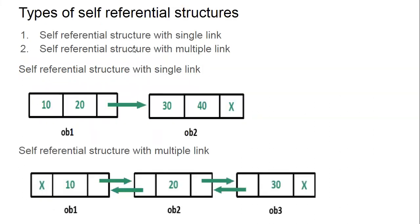Self-referential structures are of two types: single link and multiple link. The single link type is generally called a singly linked list in data structures, while the multiple link type is called a doubly linked list. In the single linked list, a structure has a data portion with one or more members, and the last member refers to the same type.